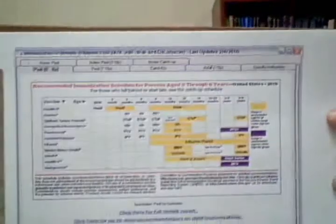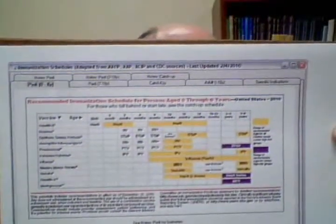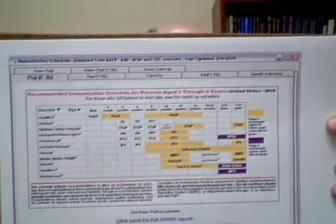Immunization schedules — for your pediatric patients in the office, you don't have to go to another place to find them. They're all right here in Amazing Charts. There's a tab at the top listing all the immunization schedules: Pediatrics 0 to 6, 7 to 18, catch-up, and adult. There are notes, specific indications, and all kinds of immunization schedules for students. Really a great resource.